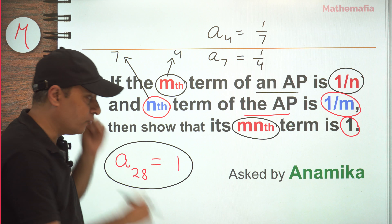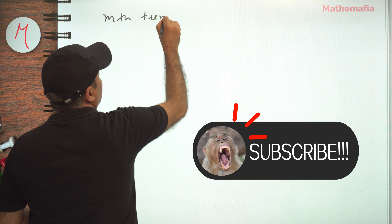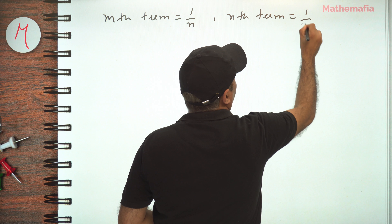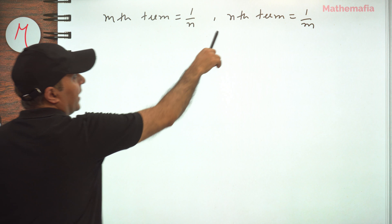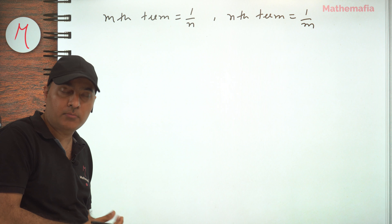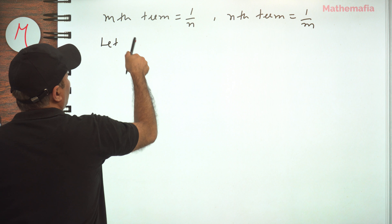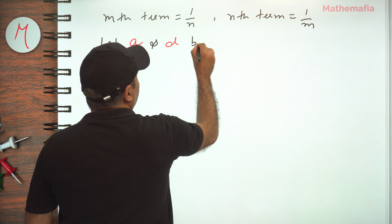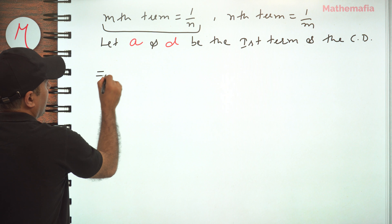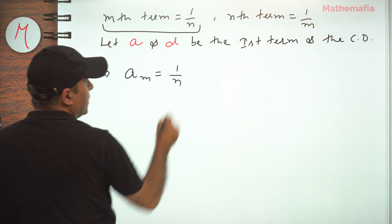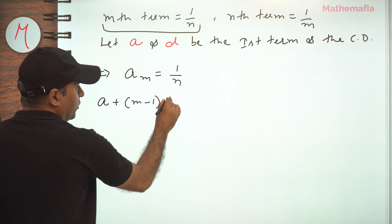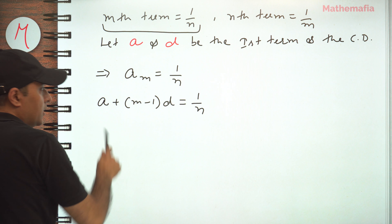So let's start the proof. We are given that the mth term is equal to 1/n and the nth term is equal to 1/m. We don't know the first term or the common difference, so let a be the first term and d be the common difference. The mth term, aₘ = a + (m−1)d = 1/n. Let's call this equation number 1.